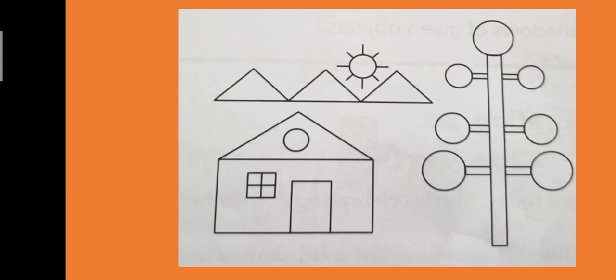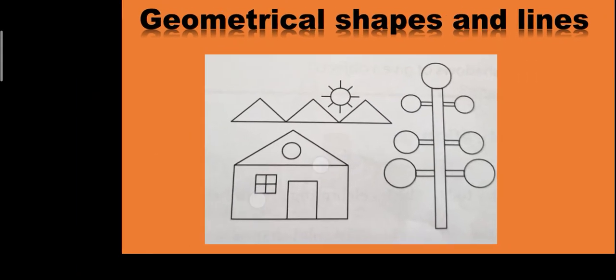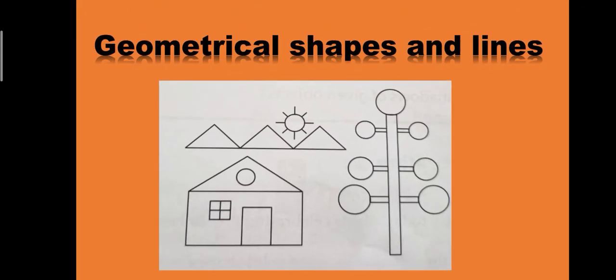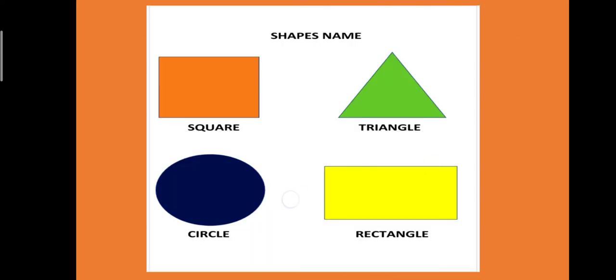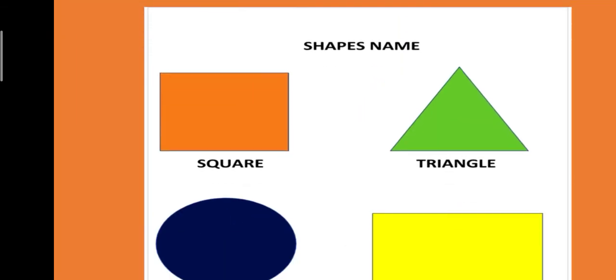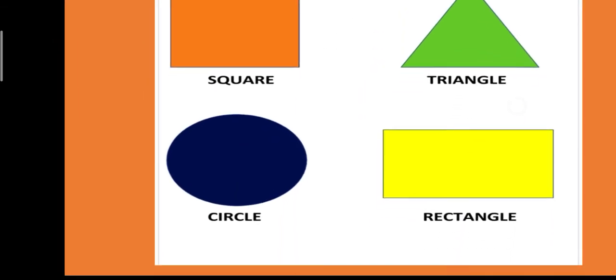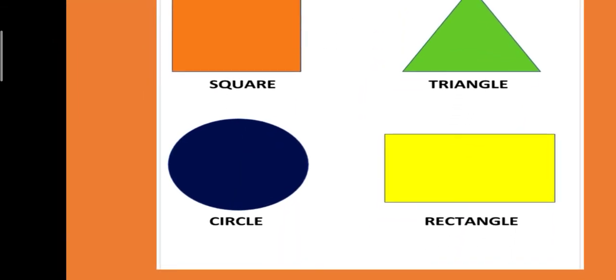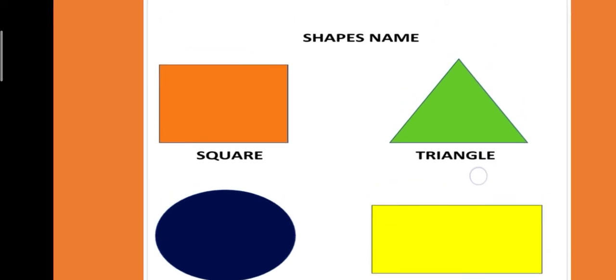We will see the next slide. It is not colored now, so we see in the next slide. Square, Triangle, Circle and Rectangle.